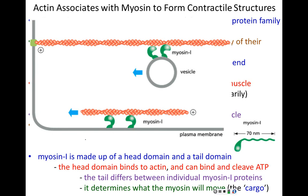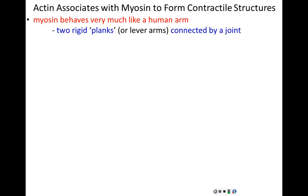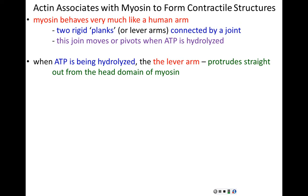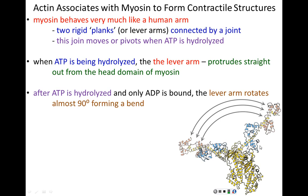Myosin is quite simple in its general structure and movement, behaving very much like a human arm or any pivotal joint. Myosin tails contain two rigid protein domains — lever arms — connected by a movable joint. This movable joint pivots the two rigid planks relative to one another, and that movement only occurs when ATP is hydrolyzed, releasing energy. When ATP is hydrolyzed, the lever arm protrudes straight out from the head domain of myosin.